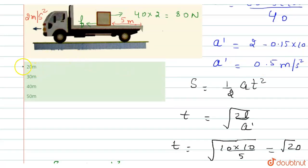And selecting the option, the first option is correct: 20 meters. I hope you understand the explanation. Thank you.